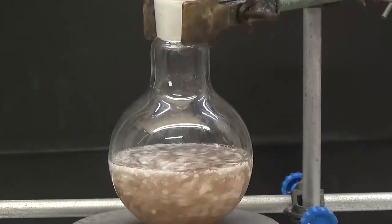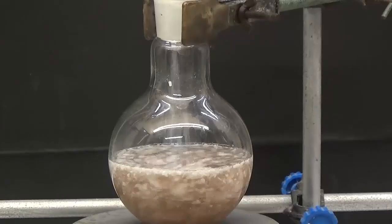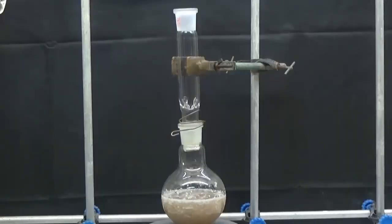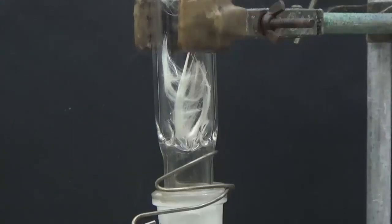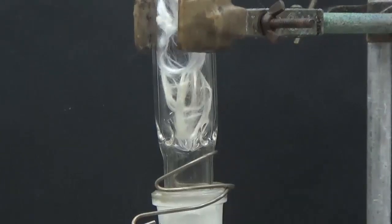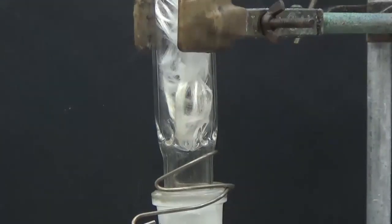Stir for approximately 20 minutes. Assemble a column packed with fiberglass in the flask to retain the phthalic anhydride that can sublimate.